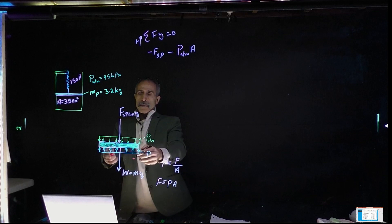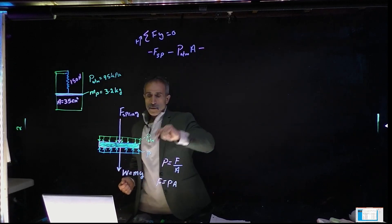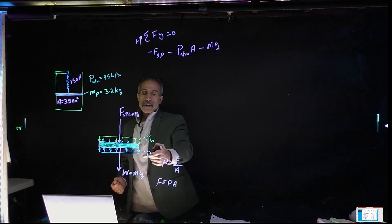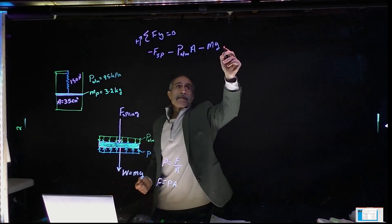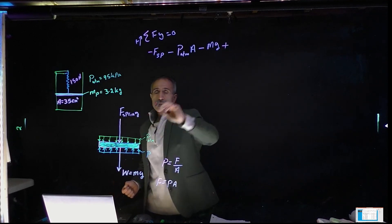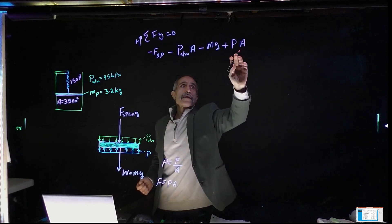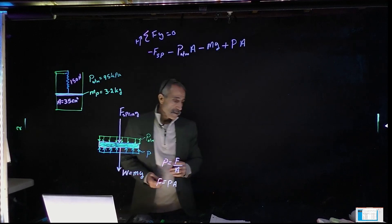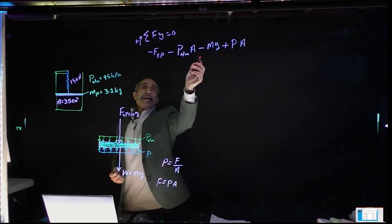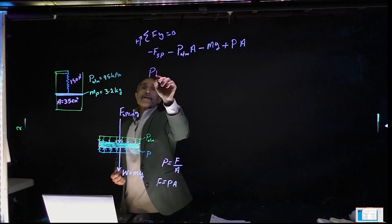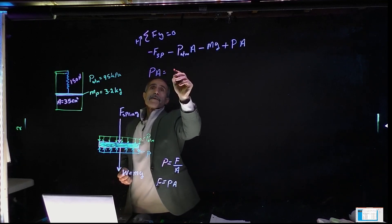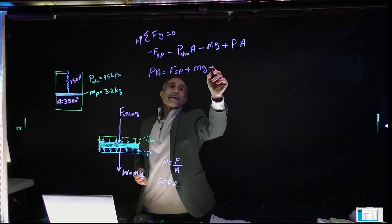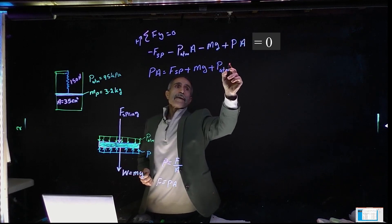Then I've got minus the force which is mg, the force of the weight of the plate. Then I got the pressure from the gas itself going up, that's a plus, plus p times A. Remember, these are all forces. Let's go ahead and isolate it. I'm going to say pA equals F spring plus mg plus p atmosphere times area. So if I divide everything by the area, I get p equals F spring plus mg divided by A plus p atmosphere.